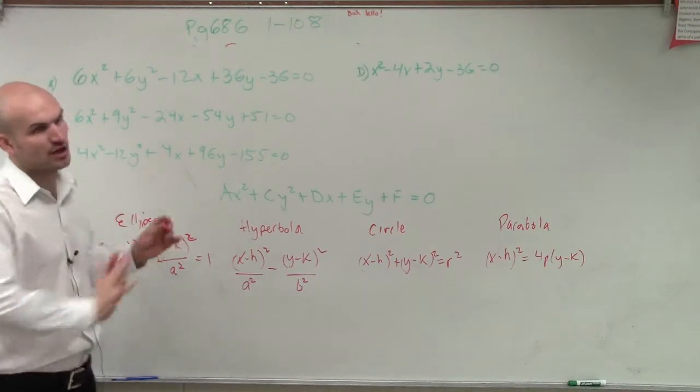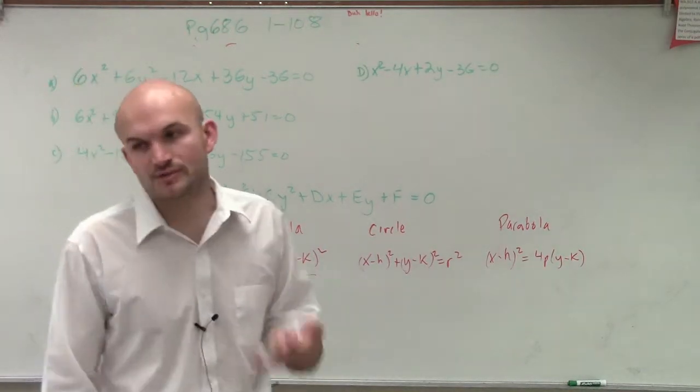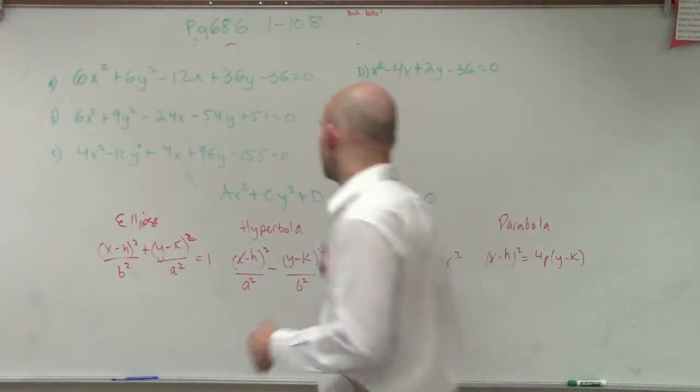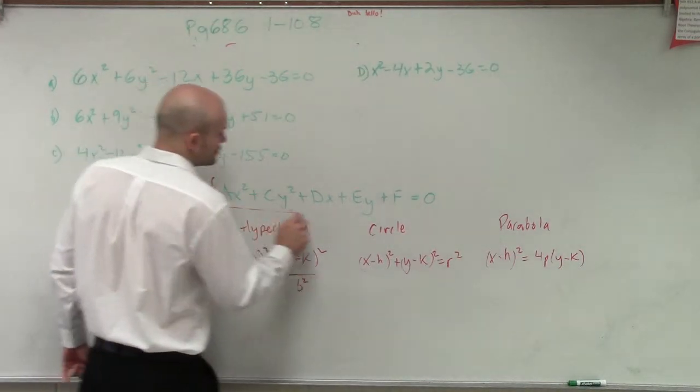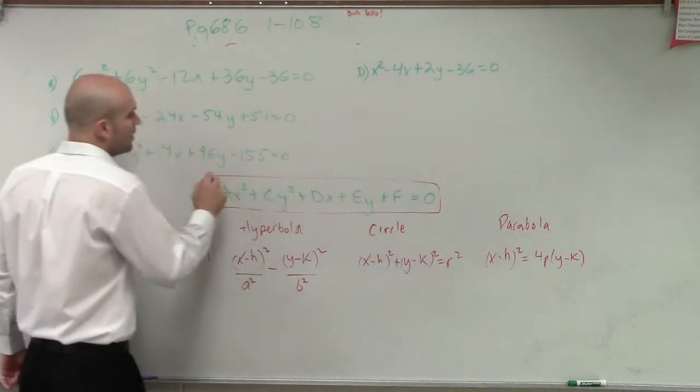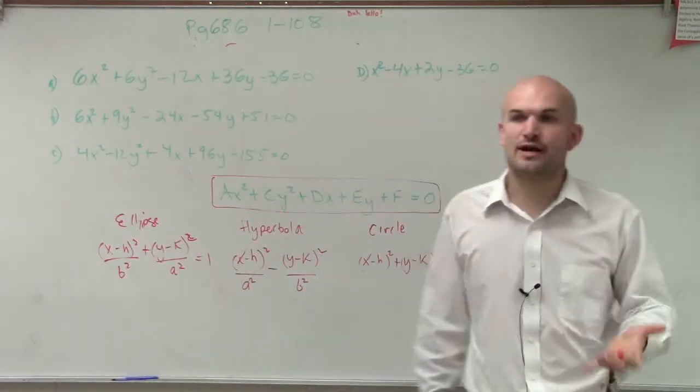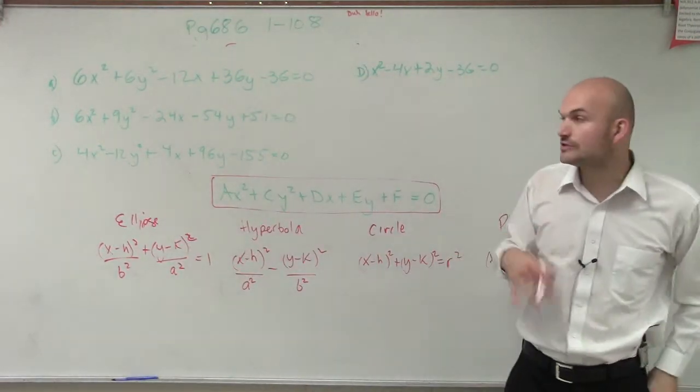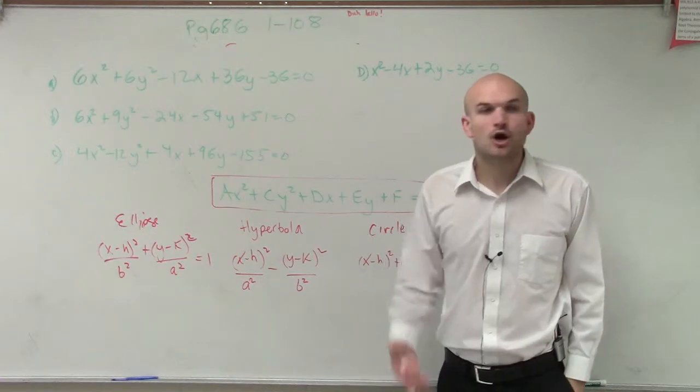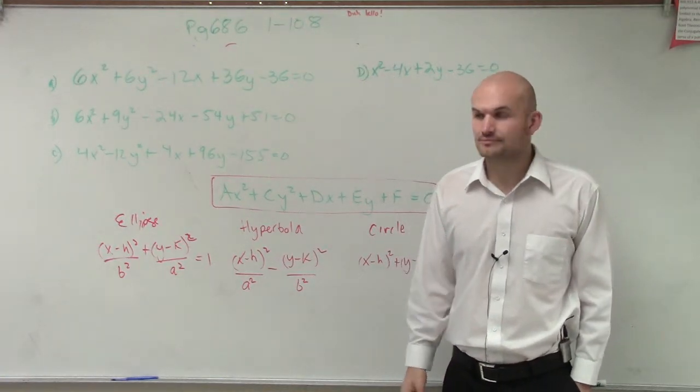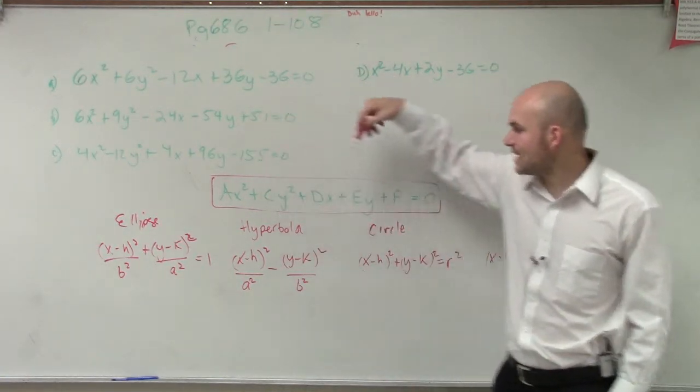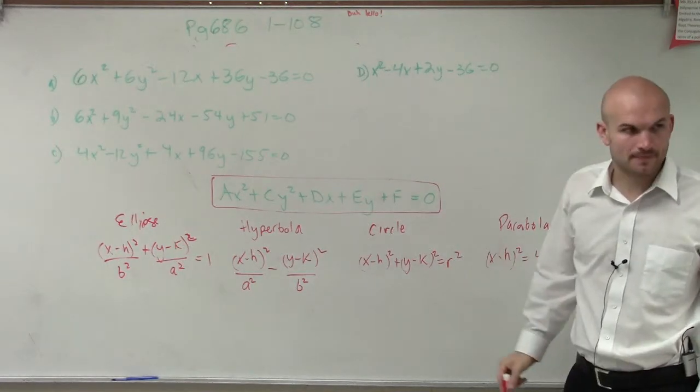Now, so I didn't write down all the equations because we don't need to. What I want to do is to kind of discuss one thing and then look at how that relates to a general form. So what I have here is I have four examples of conic sections that are written in a general form. And what we need to do is by looking at that equation, we need to determine is it an ellipse, hyperbola, circle, or parabola.